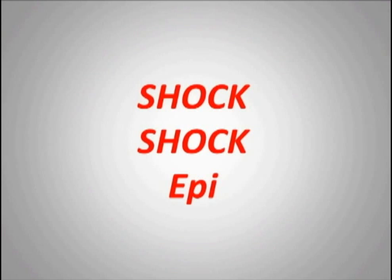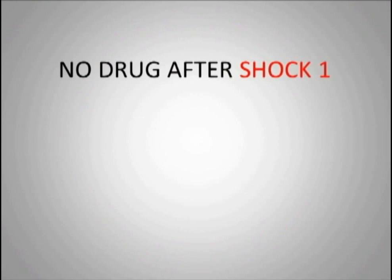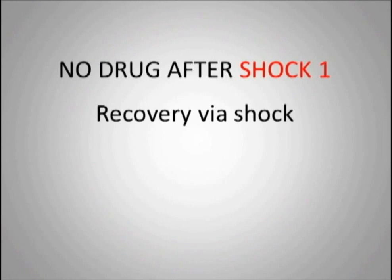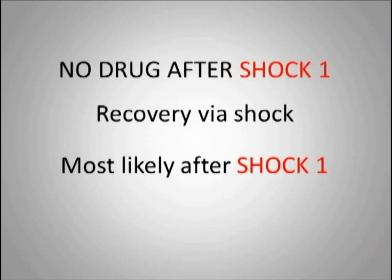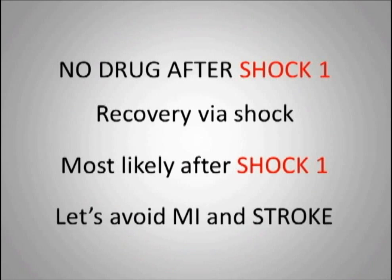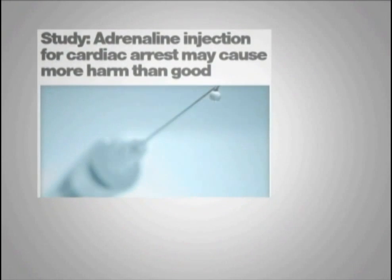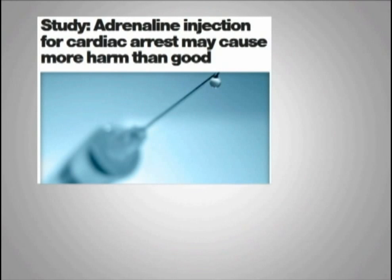Shock, shock, epi. After the first shock, no drug. After the second shock, 1 mg of epi — or 40 units of vasopressin. The rationale: recovery via shock is most likely to occur after the first shock. So let's avoid epinephrine-induced increased cardiac workload and hypertension. Let's avoid MI and stroke. Drugs used during cardiac resuscitation are not that effective — not nearly as effective as shocking and high-quality CPR.